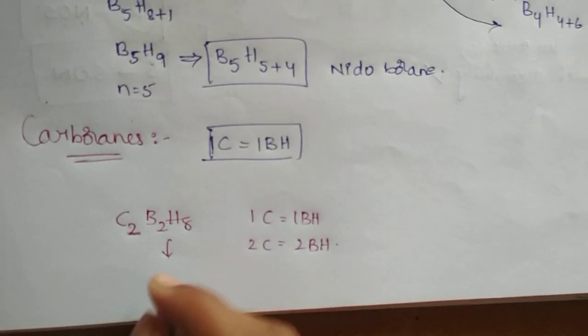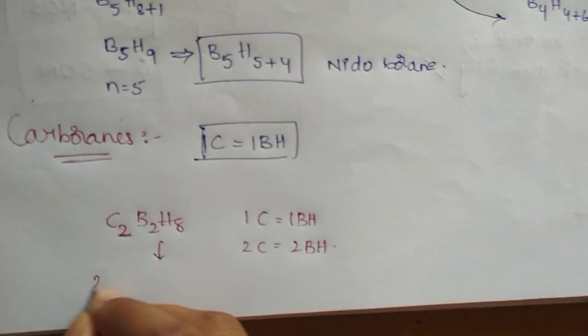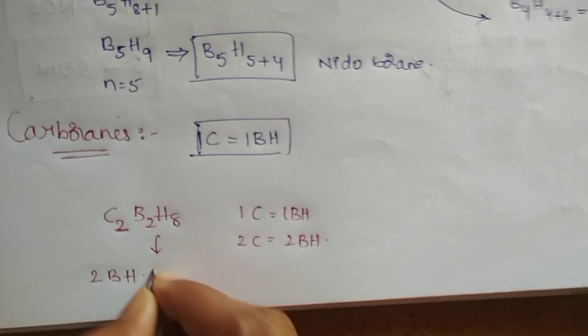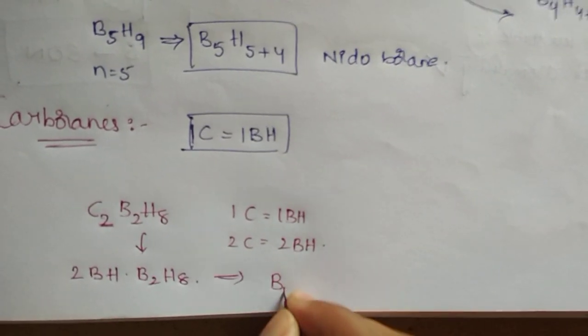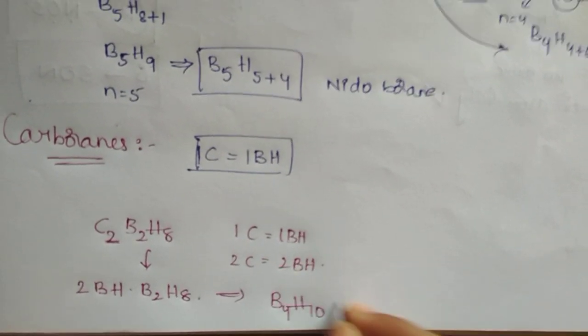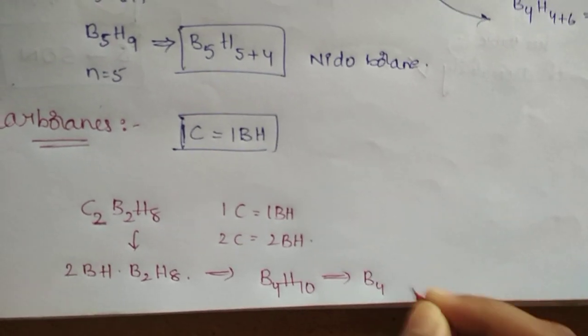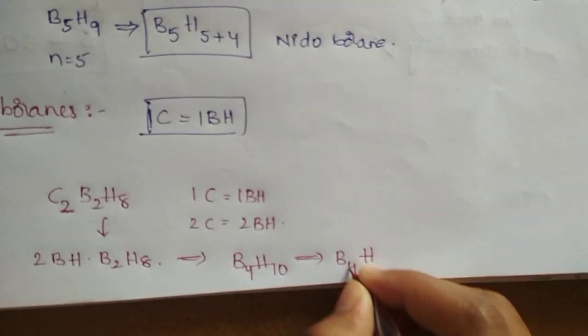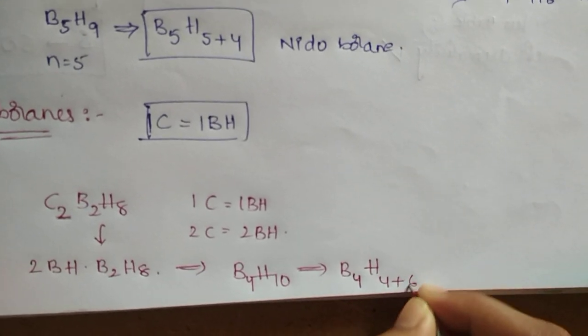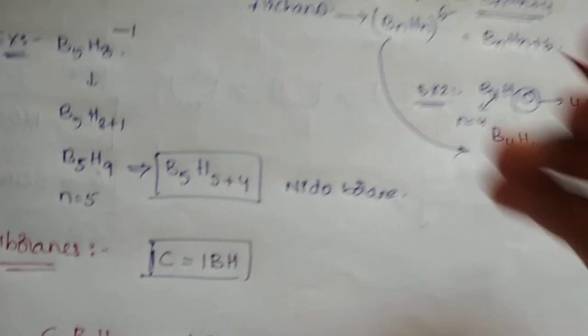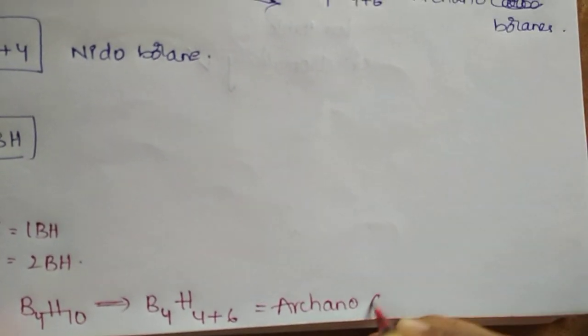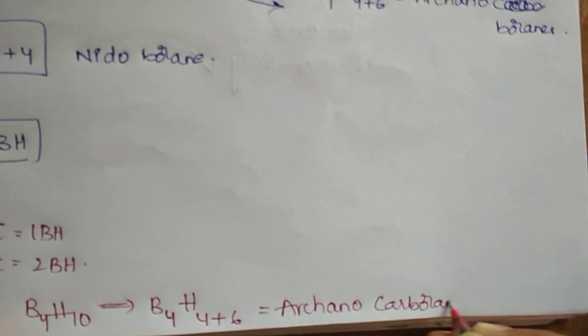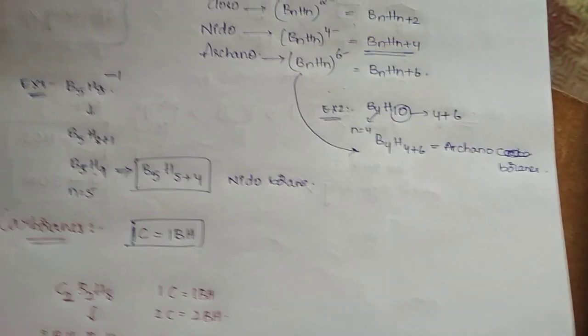Substitute this 2 C as 2 BH. B2 H8 means B4 H10, nothing but B4 H. Here N is 4. So 4 plus how much? 6. So it is in the form of Arachno. So it is Arachno carboranes. That's all, so it is an easy trick to get the classification of boranes.